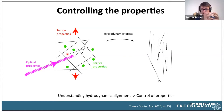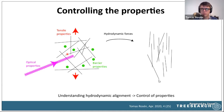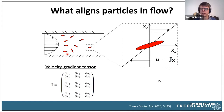If we can understand exactly how hydrodynamic alignment works, we can possibly control the properties of the final material just by changing process conditions or designing and optimizing the optimal process for a given application — controlling and tuning the process to obtain the properties we want. So we need to go back and understand what really aligns particles in flows.